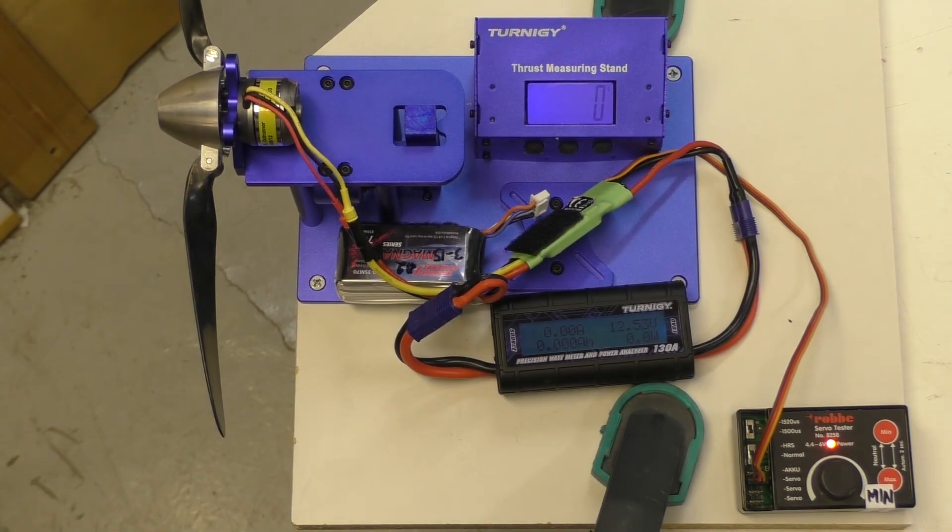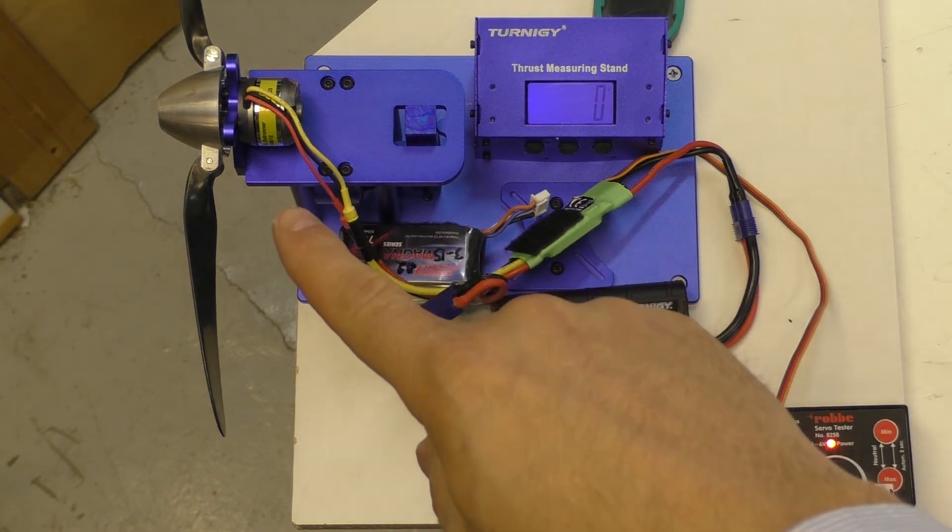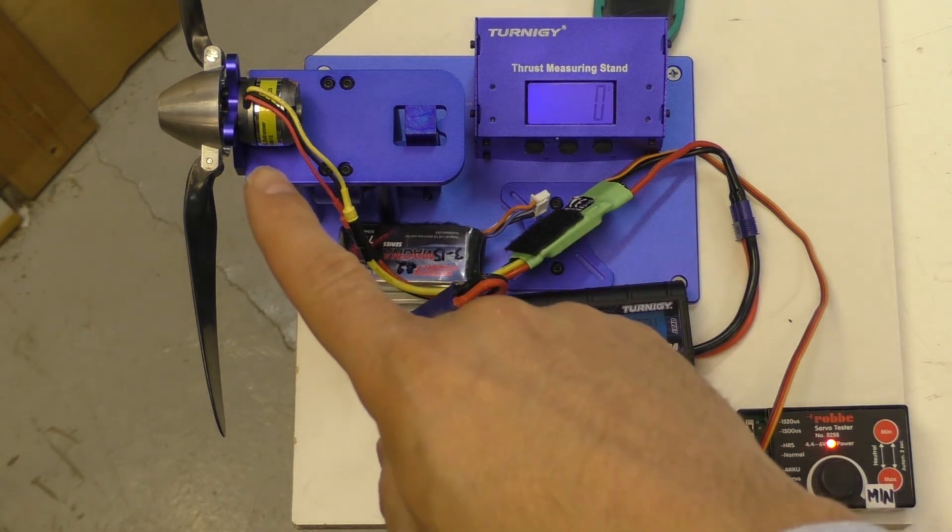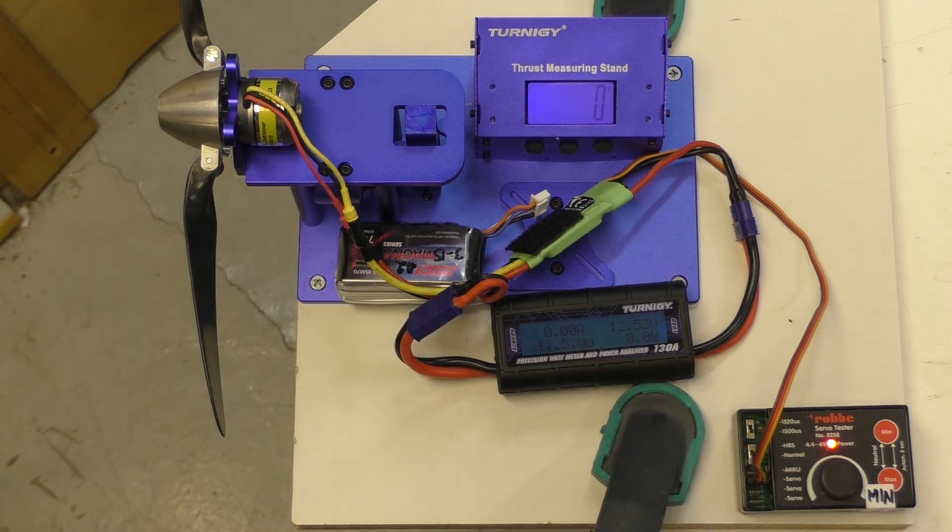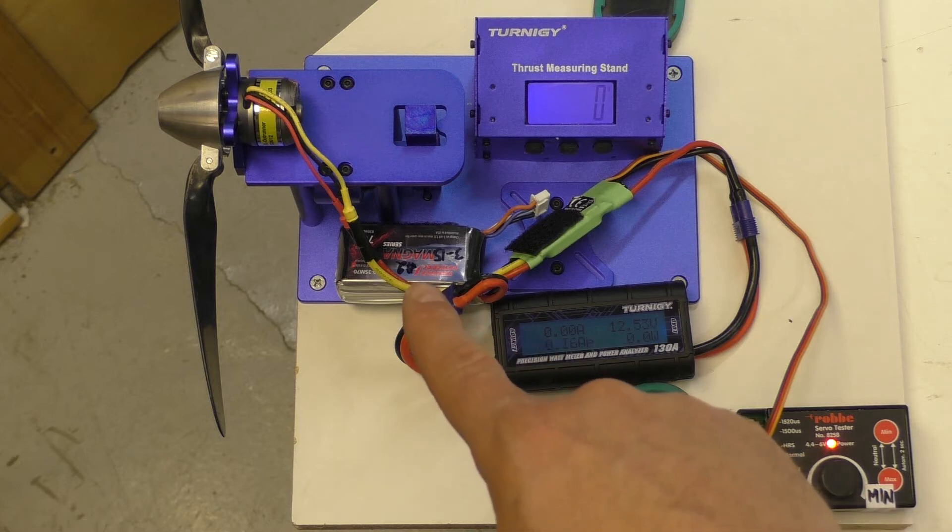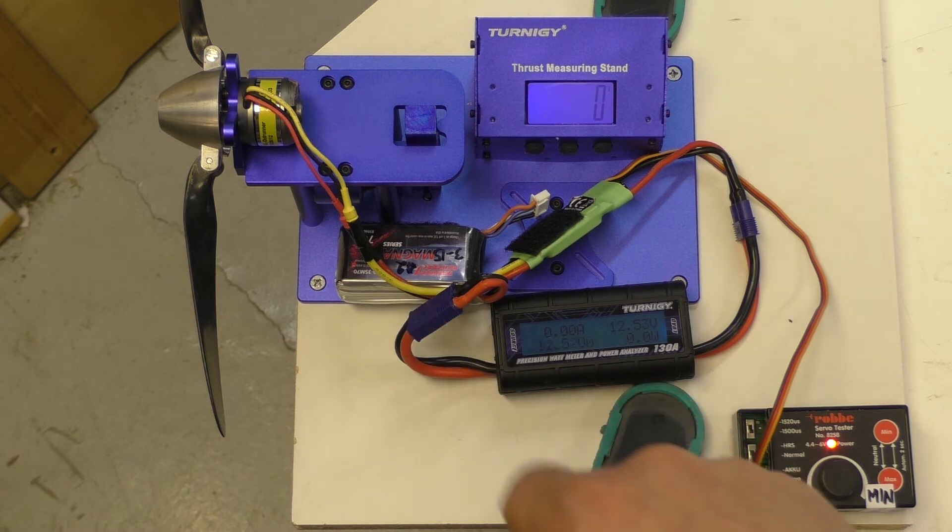Now the same test with a Roxy 1450 kV motor, still 45 grams. I think this is called a 2826 slash something with an 850 milliampere hour 3S battery at 70C.